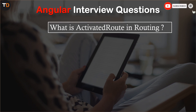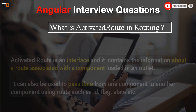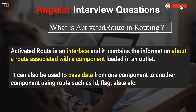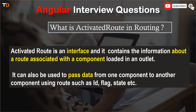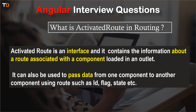Next question: what is ActivatedRoute in routing? ActivatedRoute is an interface that contains information about the route associated with the loaded component. It can also be used to pass data from one component to another component using routes, such as id, flag, state, etc.